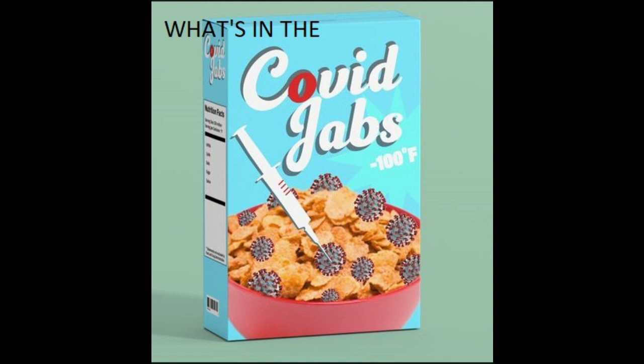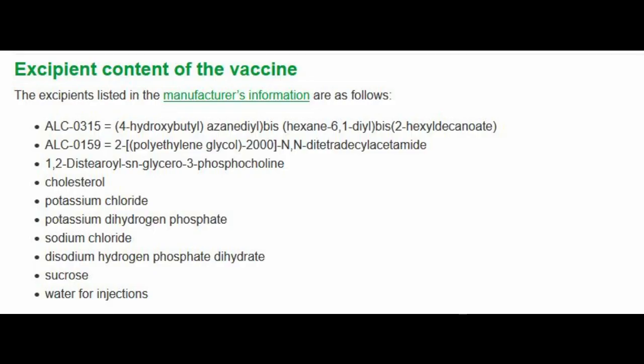I'm going to start by explaining how you read them. I expect you've copied and pasted the 4-hydroxylbutyl or xanadil bis hexane 6-1-dil bis 2 hexyl decanoate into a search engine and you've probably come back to the COVID vaccine without any explanation about what these things mean. The reason for that is this is a brand new combination of components — they've never been used before. Whatever you do, don't try to search for them individually.